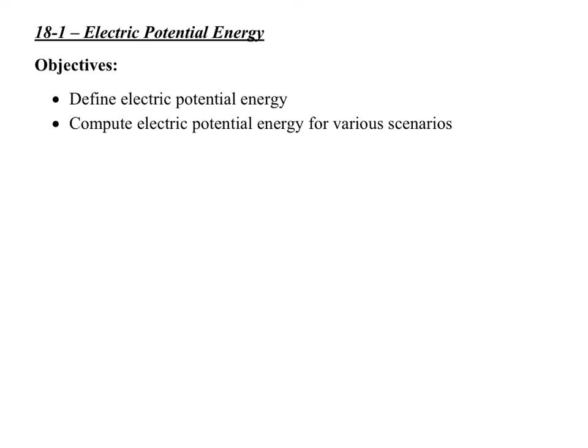So, the field created by an electrical source is like the Earth creating the gravitational field around the planet. So, the field that we're creating around an electrical source acts the same way, except the fact that it pulls or pushes, whereas gravity only pulls. So, we're going to take a look at electric potential energy, and it's going to look similar to the equation we've been using.